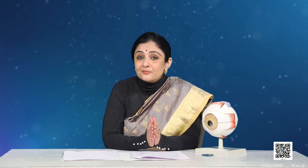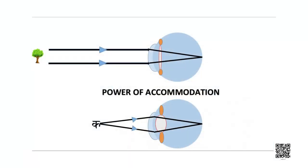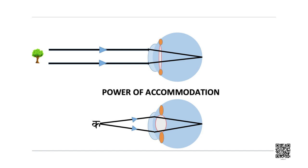Now let us talk about one very important quality of the eye lens. The eye lens is made up of a fibrous jelly-like material, and its curvature or focal length can be changed to some extent with the help of ciliary muscles. This is necessary because sometimes you need to see far-off objects like stars, and at other times you read text from a book. When the ciliary muscles are completely relaxed, the lens becomes thin and the focal length increases, enabling us to see distant objects clearly.